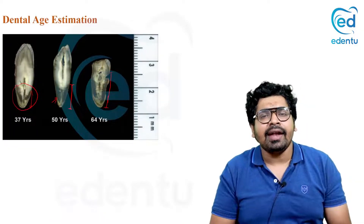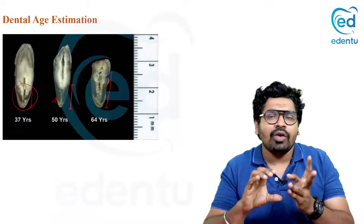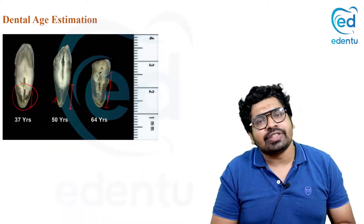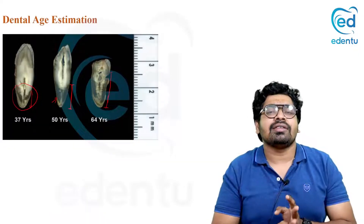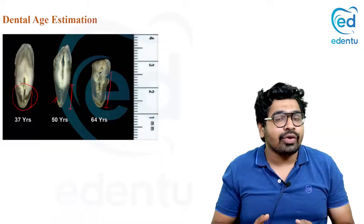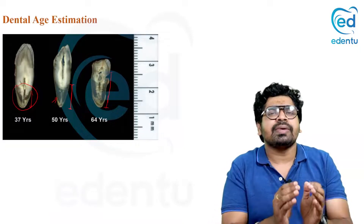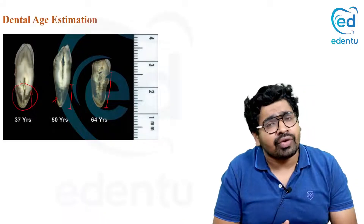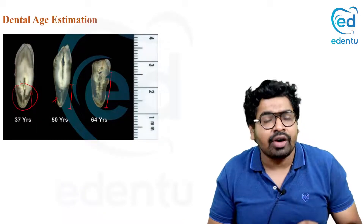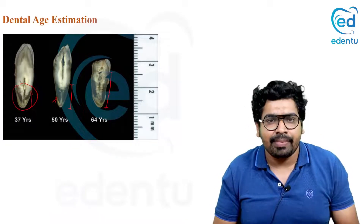For a short essay exam answer on dental age estimation, you should write an introduction covering the basic nature and purpose of the method, then cover dental age estimation for each age group: prenatal and postnatal period, children and adults. Include the Schour and Massler method, the Demirjian method, the third molar estimation method, the Gustafson method, and the dentin translucency method. Equations are not critical — knowing the parameters being assessed is sufficient for the exam.